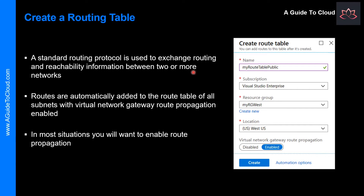Creating a Routes table is very straightforward. You must provide the name, subscription, resource group location, and whether you want to use virtual network gateway route propagation. A standard routing protocol is used to exchange routing and reachability information between two or more networks. Routes are automatically added to the Routes table for all subnets with virtual network gateway propagation enabled. In most scenarios this is what you want — for example, if you are using ExpressRoute, you would want all subnets to have that routing information.